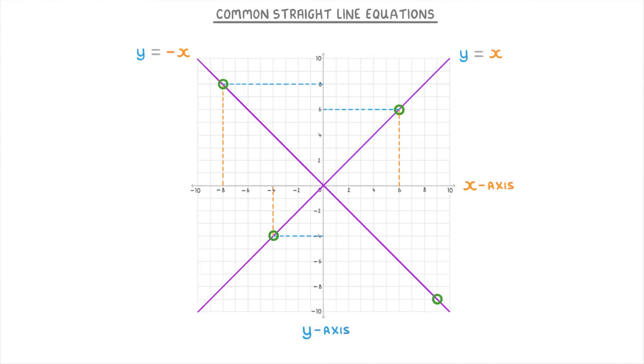And if we pick a point like this one, which has a positive x value of 9, then the y-coordinate would be the negative version, so negative 9.